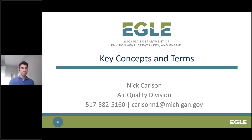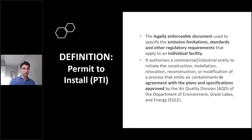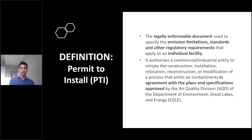To start, we'll cover the definition of a permit to install. The bolded words on this slide are key concepts we want you to pay close attention to. A permit to install, also called a PTI, is a legally enforceable document. Without your PTI, you can't install or modify your equipment — you have to get your PTI first.